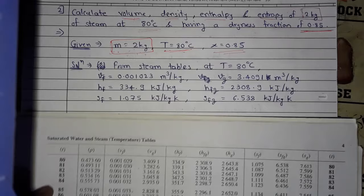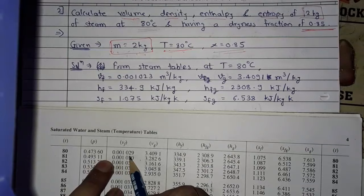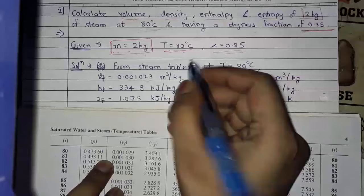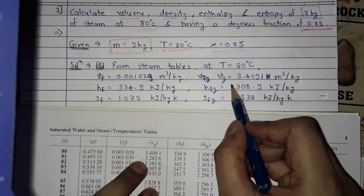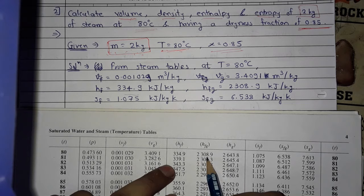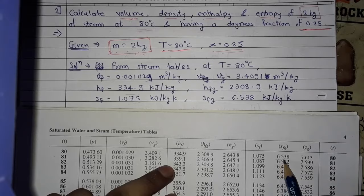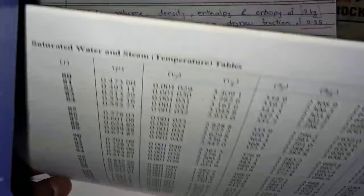For 80°C, the values are: vf = 0.001029 m³/kg, vg = 3.4091 m³/kg, hf = 334.92 kJ/kg, hfg = 2308.9 kJ/kg, sf = 1.075 kJ/kg·K, sfg = 6.538 kJ/kg·K. We have now read all the values from the temperature steam table.